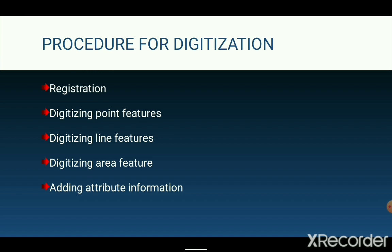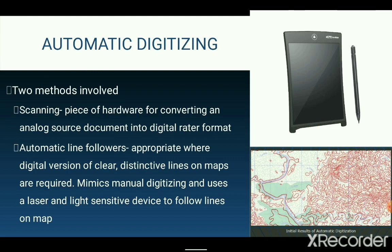The major drawback of manual digitizing is that it is a tedious and time-consuming process. To reduce this, we use automatic or on-screen digitizing. Automatic digitizing is generally used when a large number of complex features such as topographic maps, contours, and land use maps need to be digitized. There are two methods used in automatic digitizing: the scanning method and the automatic line following method.